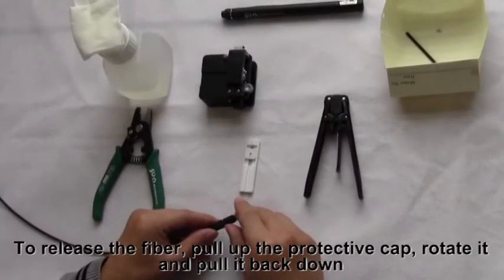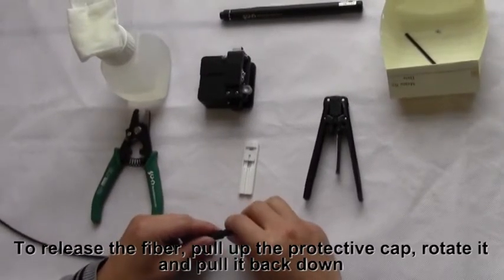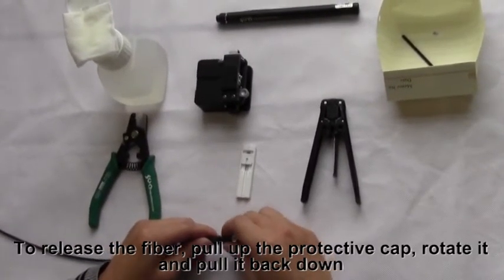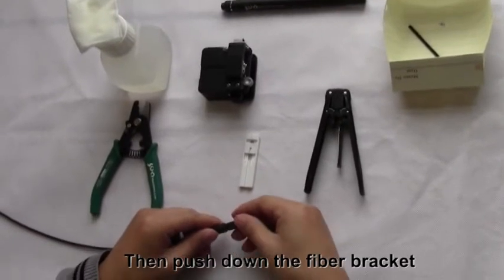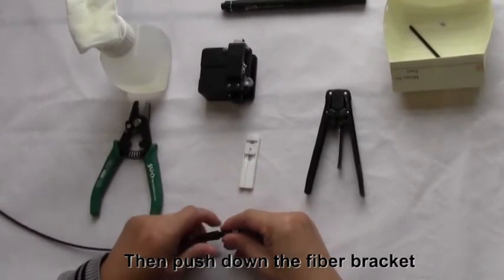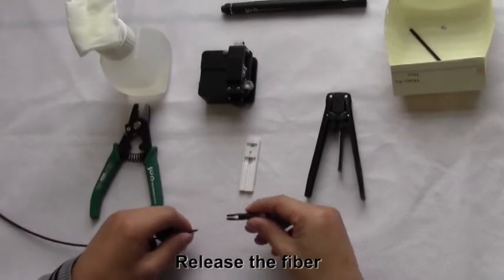To release the fiber, pull up the protective cap, rotate it and pull it back down. Then push down the fiber bracket, rotate the tail, and release the fiber.